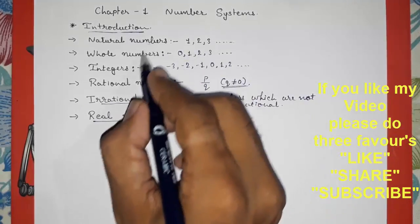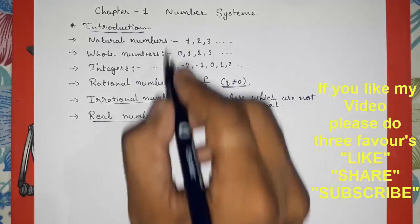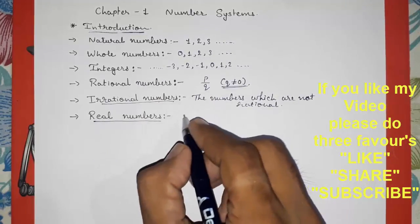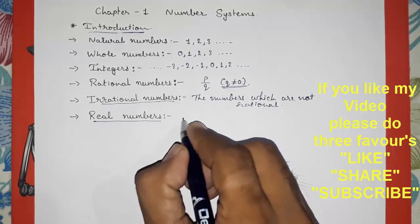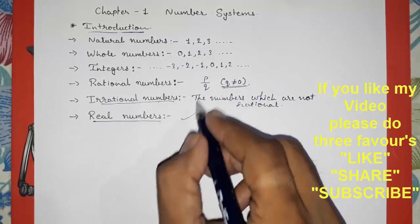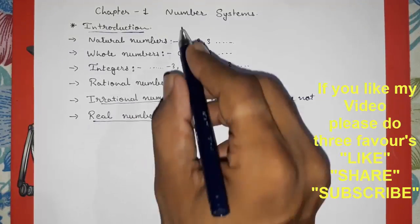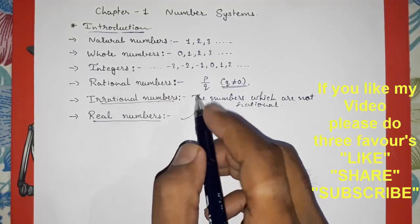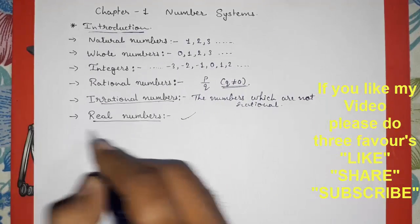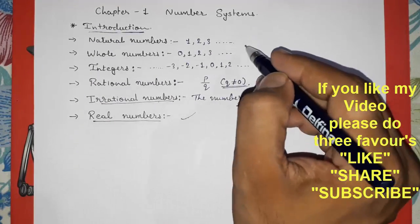And then, at the last, real numbers: natural, whole, integer, and rational numbers — all together — make real numbers. So all the above numbers will come under real numbers. This is the basic thing you should know.